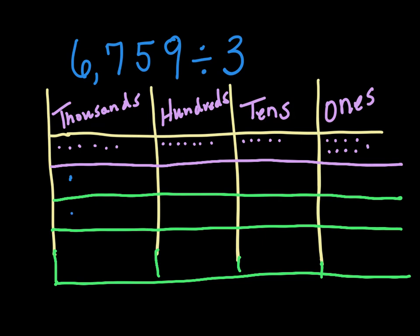We split the 6 thousands into 3 groups of 2. Then we take that 7 hundreds — 6 go into the groups and we give the extra 1 hundred to the tens column. That gives us 15 tens total, and we know that 3 times 5 is 15. So we split up the 15 tens equally into the 3 groups.